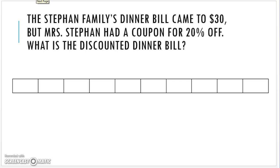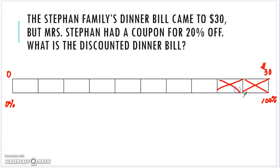The step family dinner bill came to $30, so what they need to pay is $30 at full price. 100% is $30 and 0% is zero dollars. Miss Steven had a coupon for 20% off, so what is the dinner bill? If she's not paying 20%, wherever this line is represents the remaining part she does have to pay. 100% minus 20% means she'll pay 80% of the bill. First, I need to figure out: $30 total divided by 10 sections gives each equal increment.